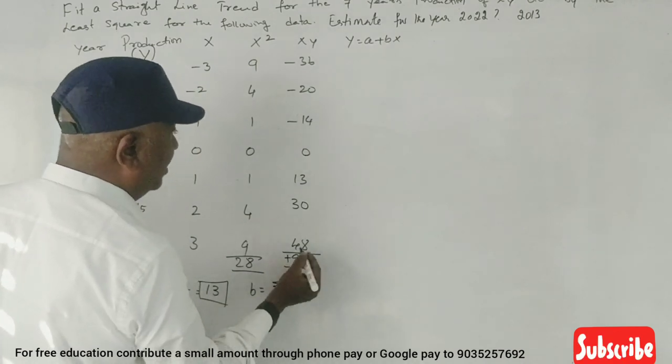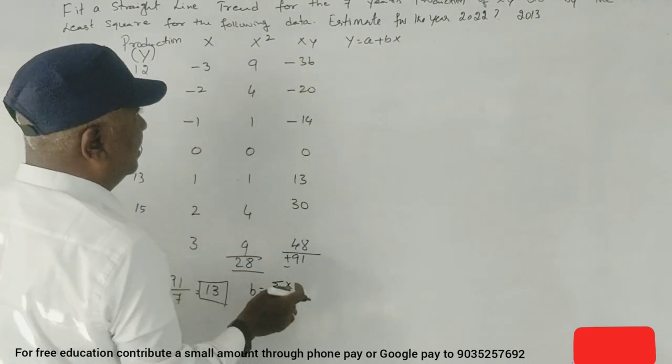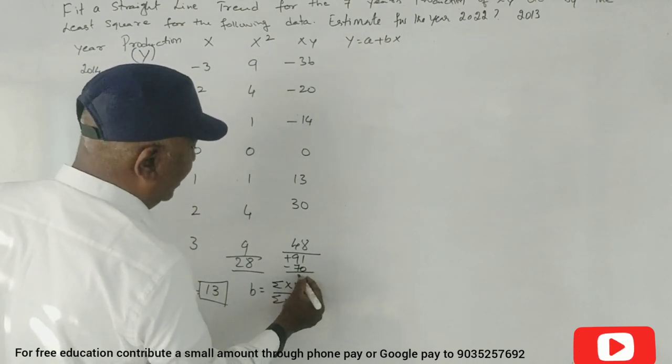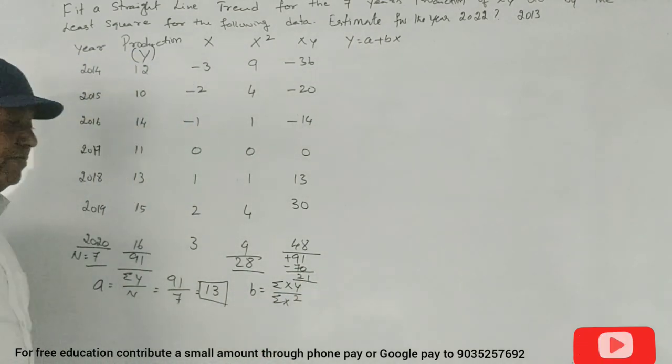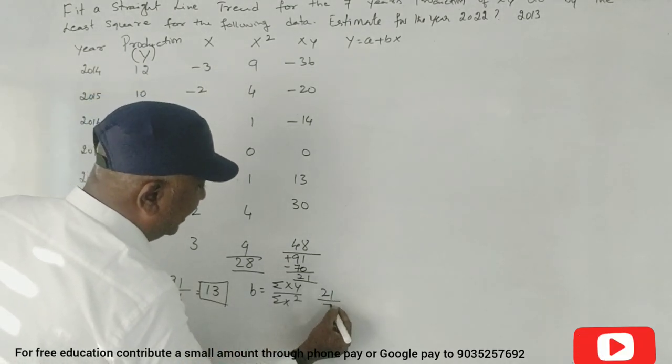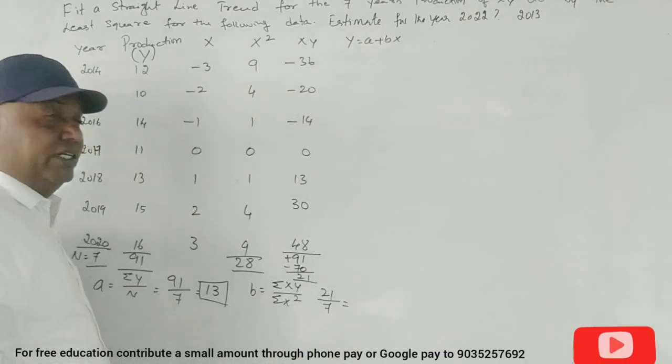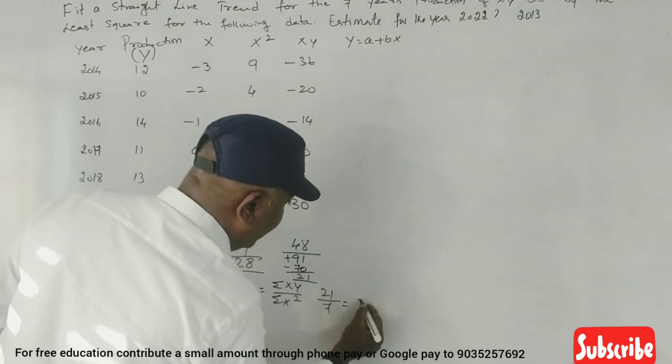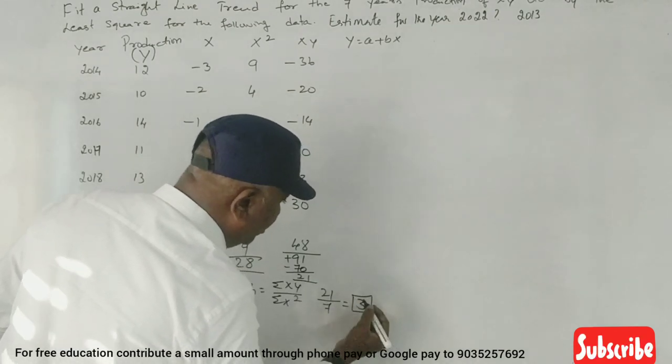Plus 91, minus 60, minus 70, I will get 21. Summation XY is 21. B equals to 3. Correct? So B equals 3.